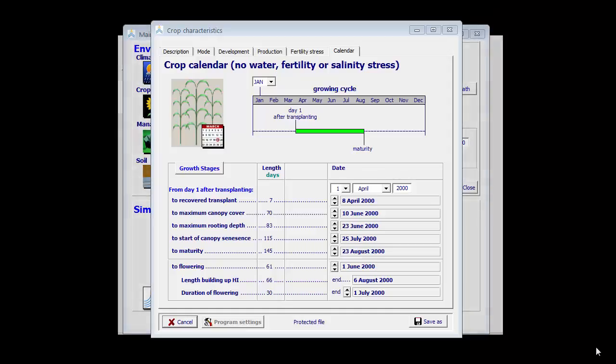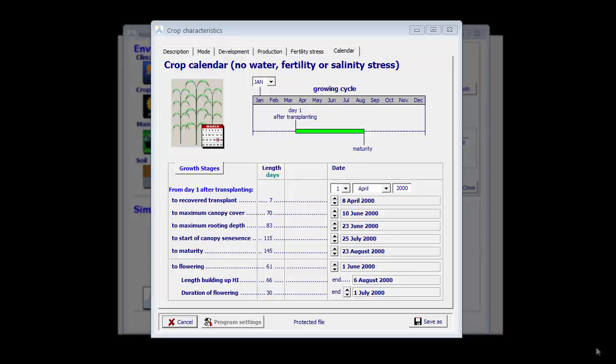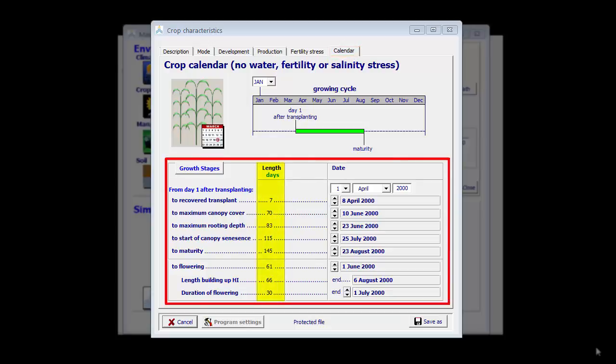In the previous example, I have tuned the crop calendar for tomatoes to the climate of Foggia. In the calendar tab sheet, I can see the length of the different growth stages which are expressed in days. Now I am going to convert those days into growing degree days. This I do here in the tab sheet mode.